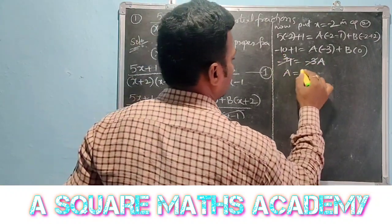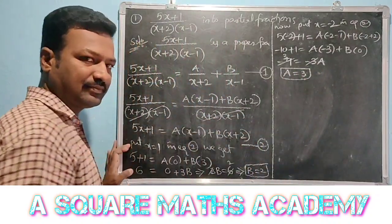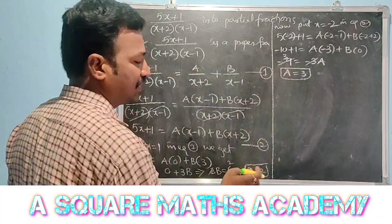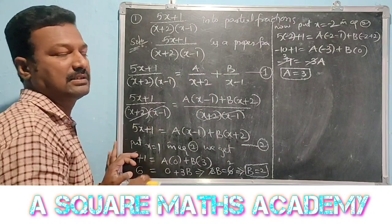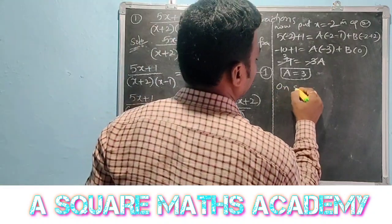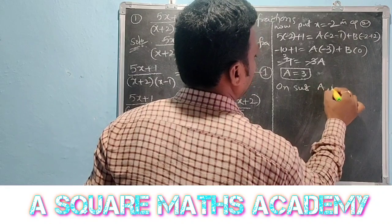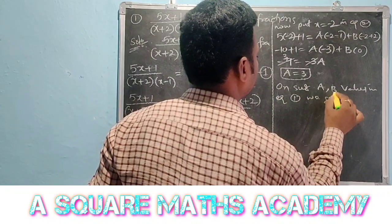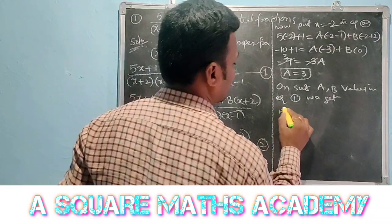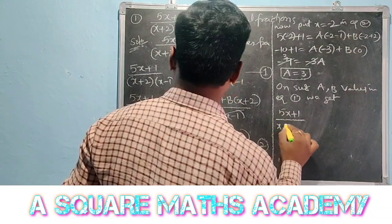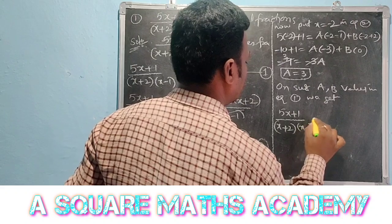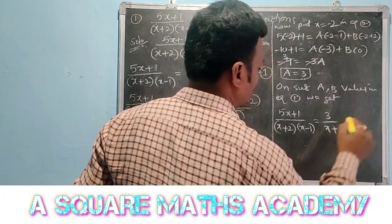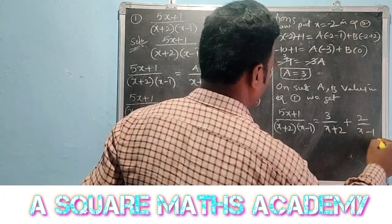We now have A equals 3 and B equals 2. Substituting these values into equation 1, the partial fraction decomposition is: 5x plus 1 by (x plus 2)(x minus 1) equals 3 by (x plus 2) plus 2 by (x minus 1). These are the partial fractions of the given fraction.